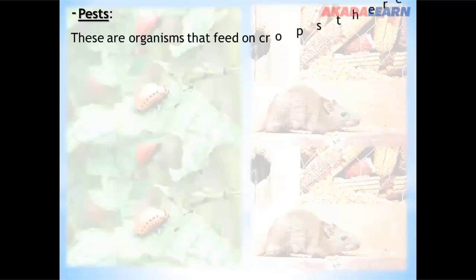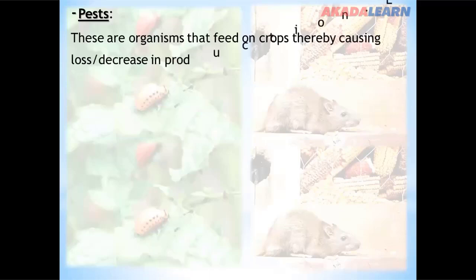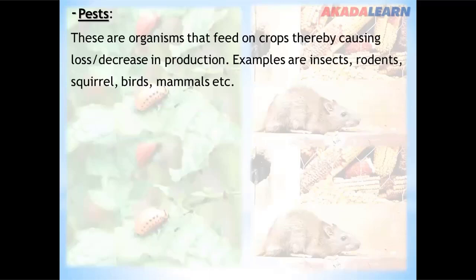Pests are organisms that feed on crops, thereby causing loss or decrease in production. Examples are insects, rodents, squirrels, birds, mammals, etc. Pests can also affect not just crops — they can also affect animals.